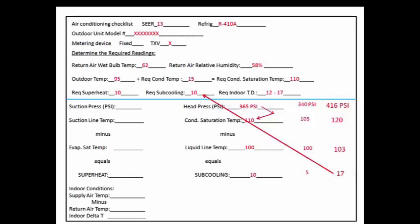Our required subcooling is 10 degrees, so we have high subcooling. So the high head pressure of 416 psi and the high subcooling tells us we have an overcharged system and some refrigerant needs to be taken out.